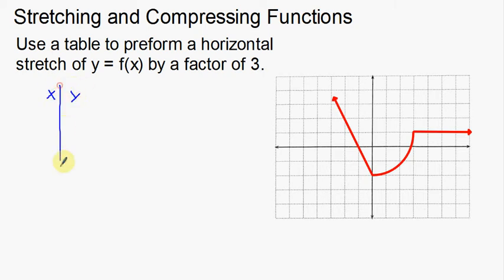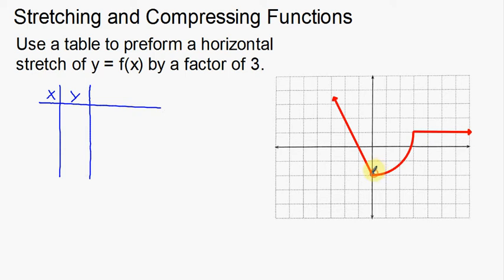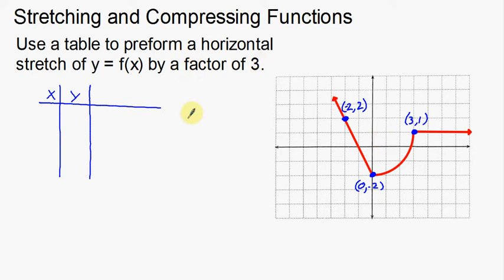I'm going to start with an xy table. I need to find some xy coordinates on my function. One that's obvious is a valley right there at (0, -2). Another useful one is this little elbow at (3, 1). And another one over here on the arm at (-2, 2). Depending on your function you might use 2, 3, 5, or 10 points — these were the important ones: a valley, an elbow, and a point on the arm.